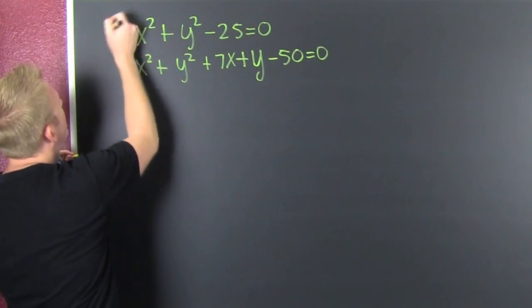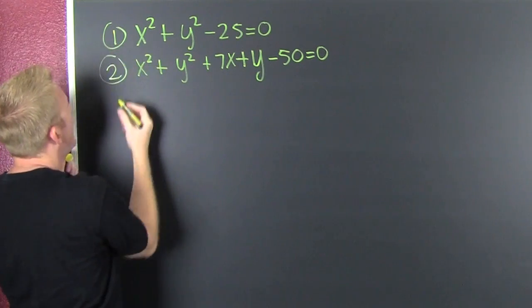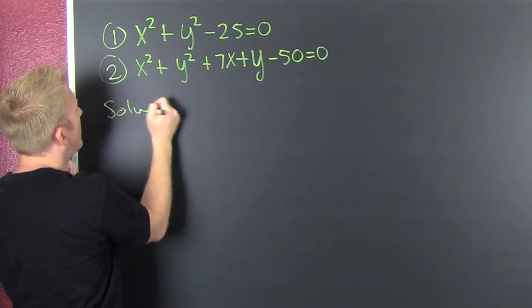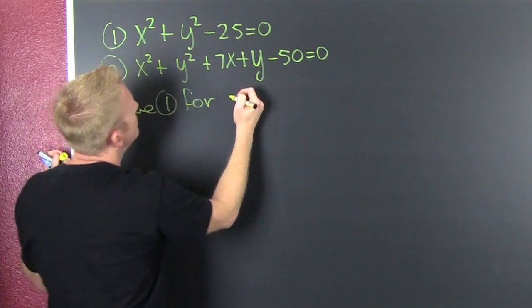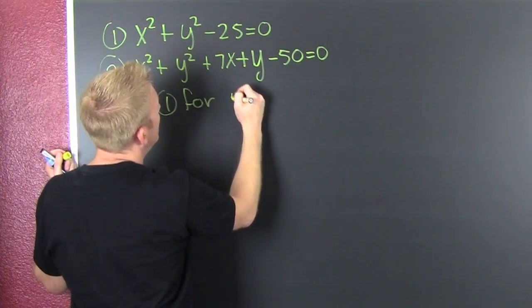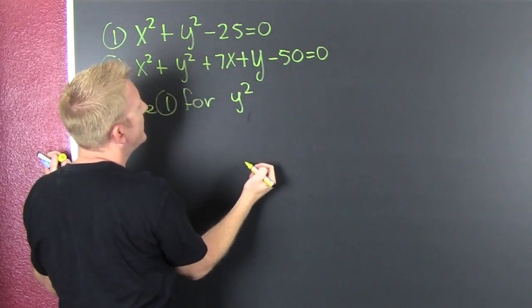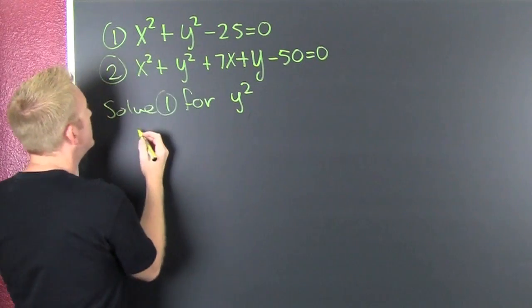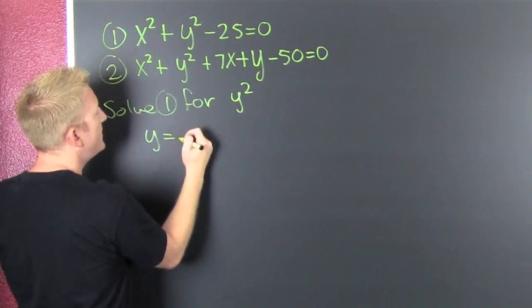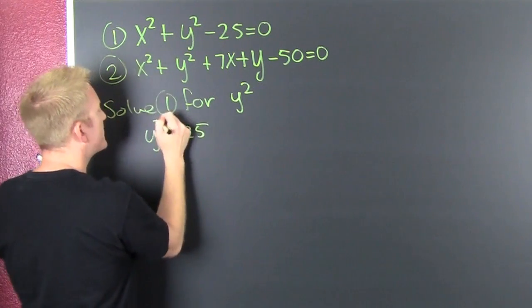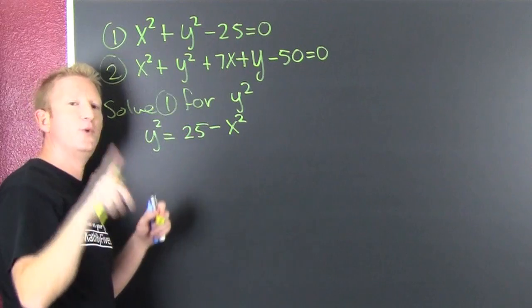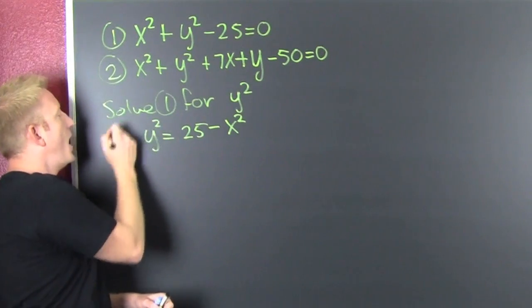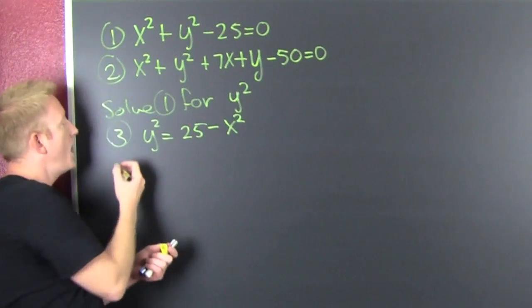When I say double sub I mean a double substitution. If this is equation 1 and that's 2, I want to solve 1 for y squared. So then y squared is gonna equal 25 minus x squared. That's y squared equals 25 minus x squared. I'm ready for my first substitution. I'm gonna call this equation 3.